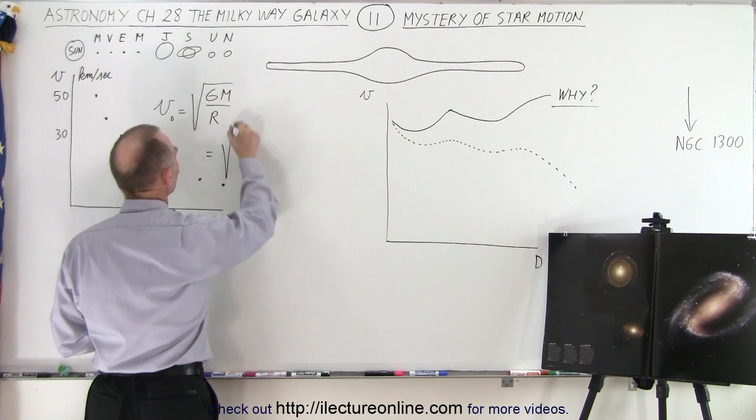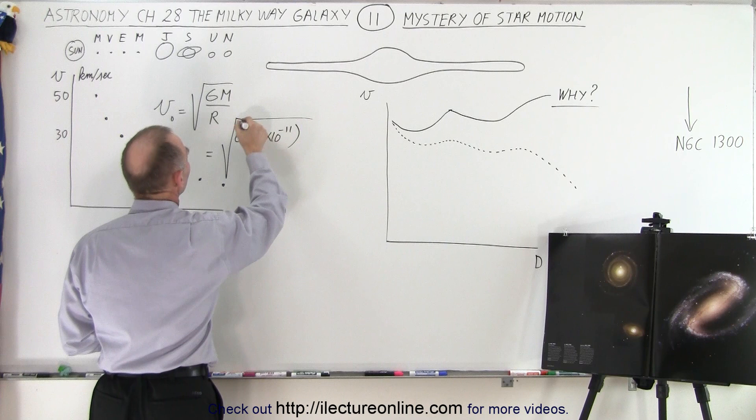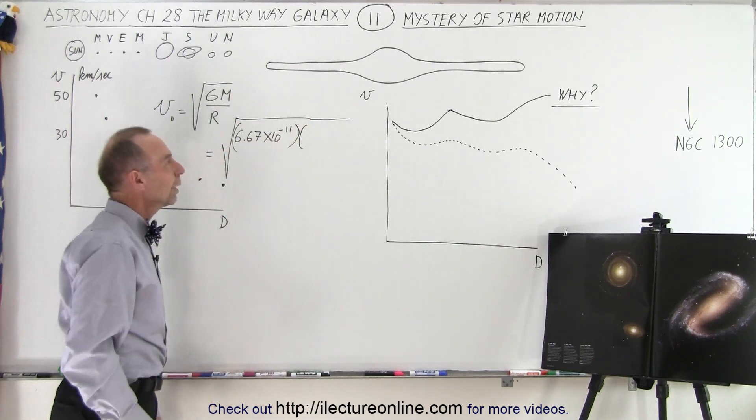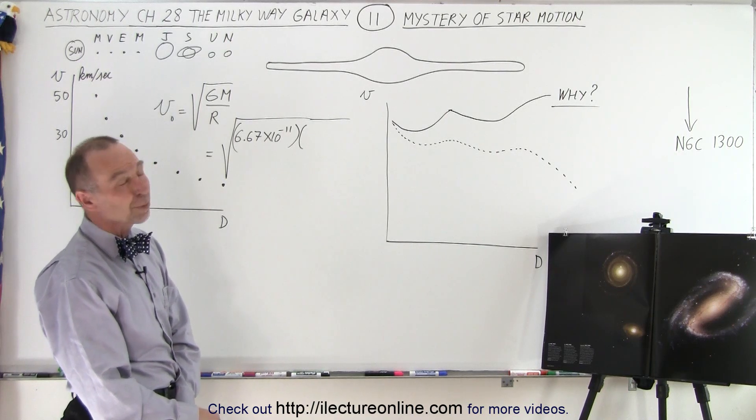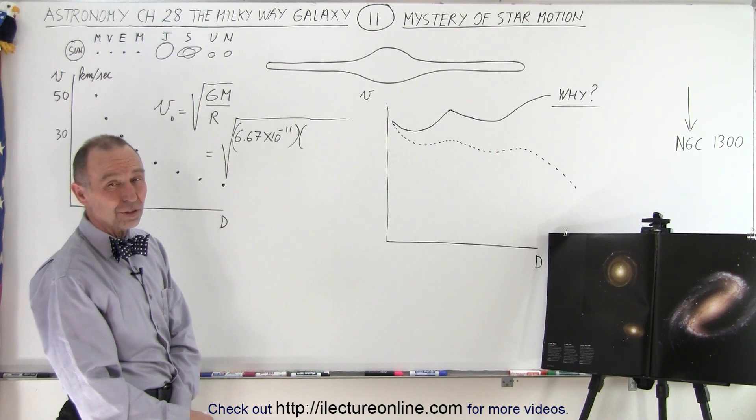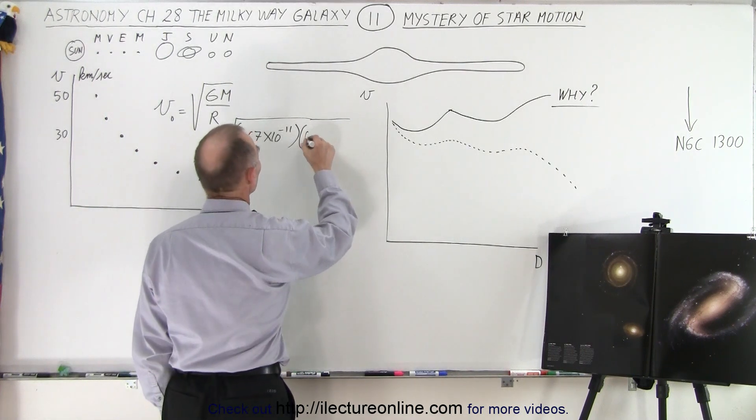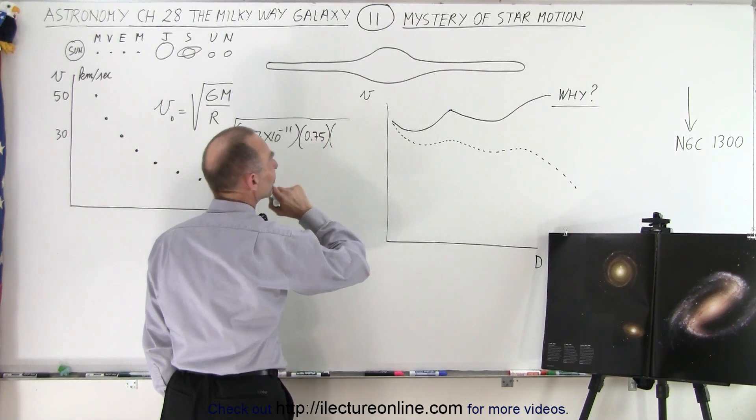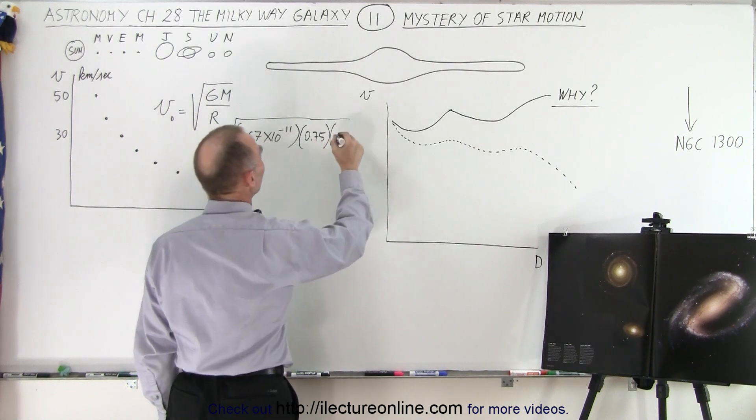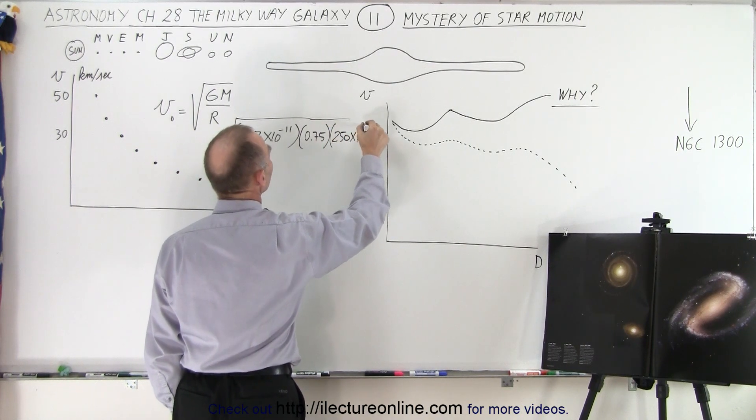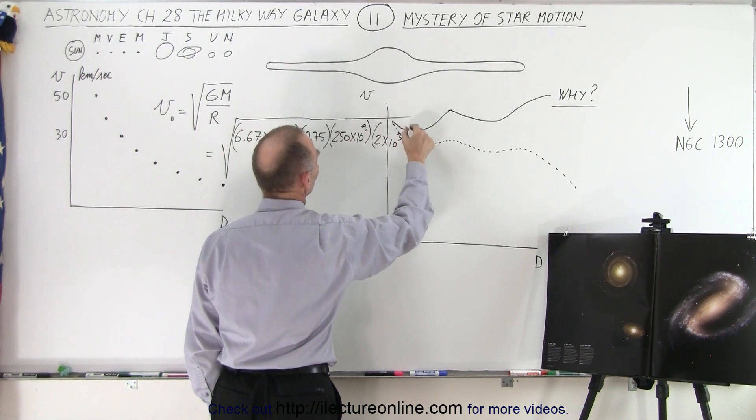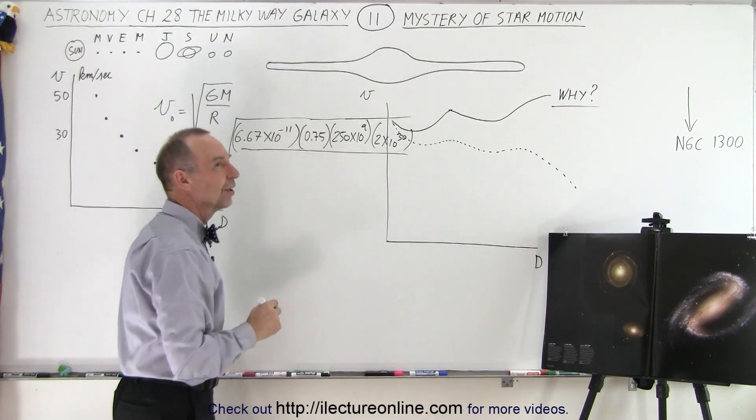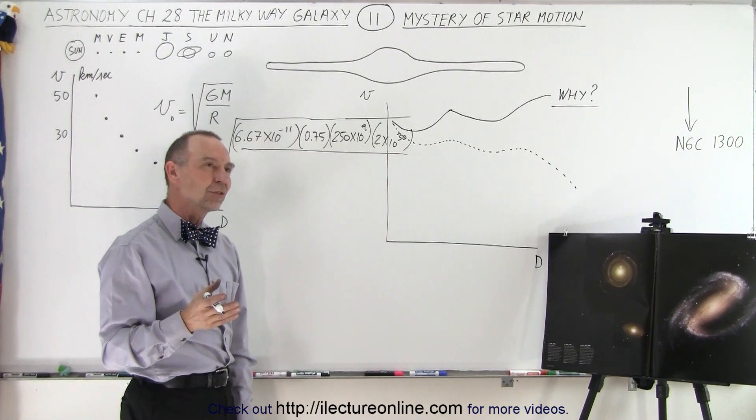Okay, so it's equal to the square root of 6.67 times 10 to the minus 11. The mass, well where the sun is at 28,000 light years, I would say that's about three quarters the mass of the galaxy. Yeah, three quarters, so 0.75 times 250 billion - 250 times 10 to the ninth - and then times the mass of the sun, 2 times 10 to the 30th.